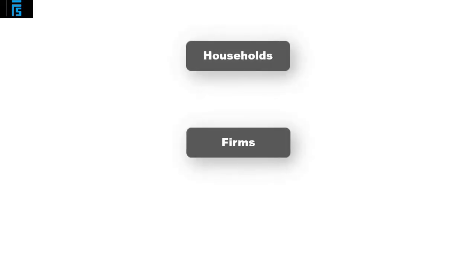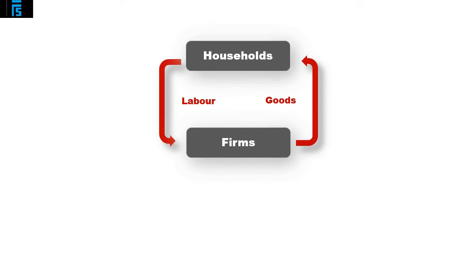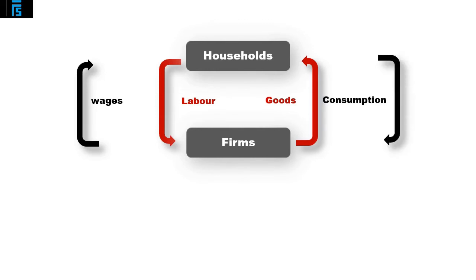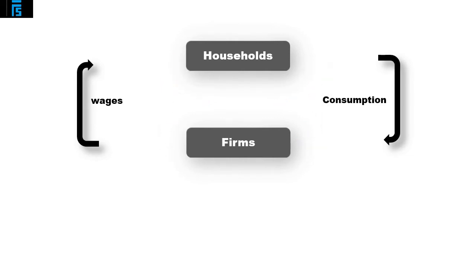In its simplest form, the economy has two players: firms, who manufacture goods, and households, who supply the factors of production, such as labour and capital. To show this diagrammatically, households supply labour to firms, which in turn allows firms to manufacture goods which they supply to households. As goods and services flow in one direction, the associated money flows in the opposite direction. Households receive wages in return for supplying their labour, and this means they can pay for the goods provided by firms. This is referred to as consumption. We now have a continuous circle of money flowing around the economy, and this represents the size of the economy.